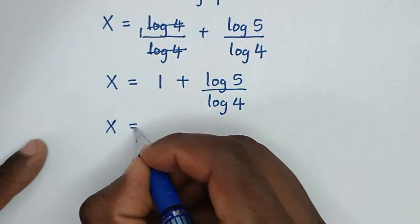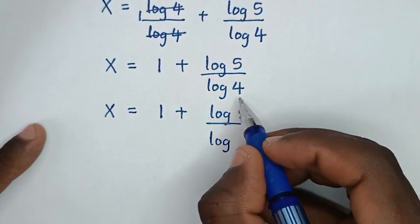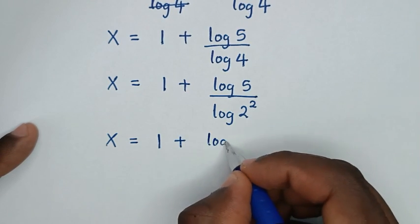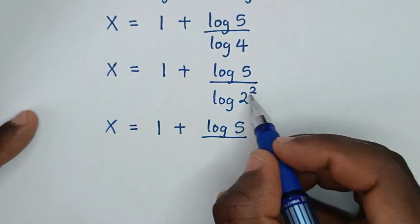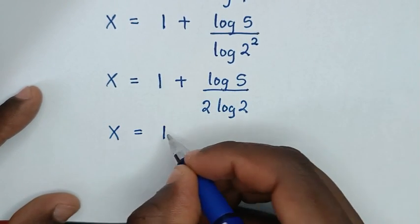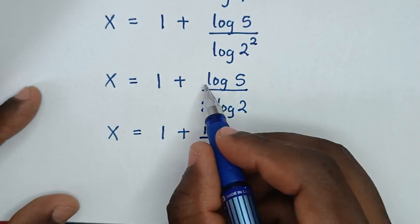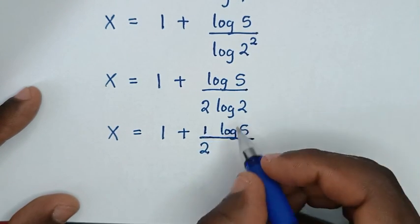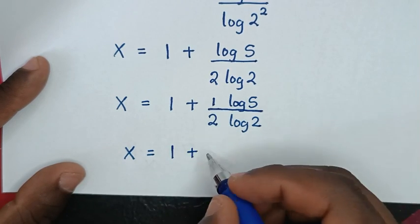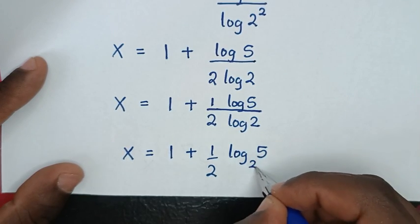Then in the next step, x is equal to 1 plus log of 5 over log of 4. Now 4 is the same as 2 squared, so log of 4 becomes log of 2 squared, and this square moves to the front giving 2 times log of 2. So the 2 in the denominator becomes one half, giving x is equal to 1 plus one half times log of 5 over log of 2.